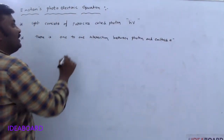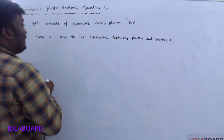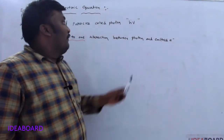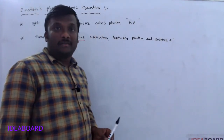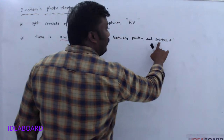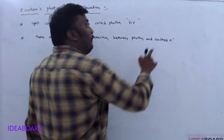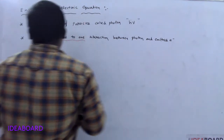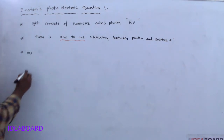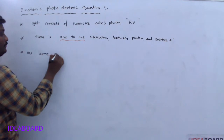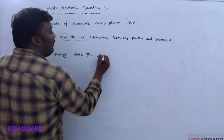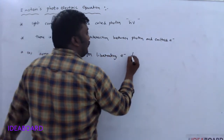This is very important: there is one-to-one interaction between the photon and the emitted electron. Whenever a photon is incident on the metal surface, the energy of the photon is completely absorbed by one electron only. By using this energy, the energy is utilized in two ways. The first one is some energy is used for liberating the electron from the metal surface.